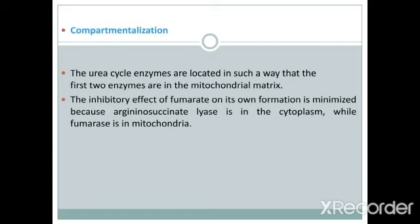The urea cycle enzymes are compartmentalized such that the first two enzymes are in the mitochondrial matrix and the remaining enzymes are in the cytoplasm. This arrangement minimizes the inhibitory effect of fumarate on its own formation, because arginosuccinate lyase is in the cytoplasm while fumarase is in the mitochondria.